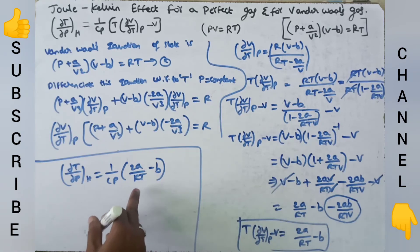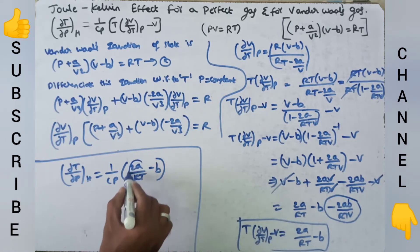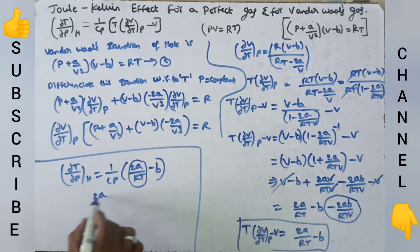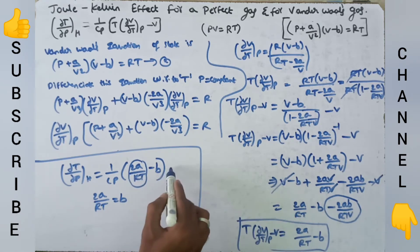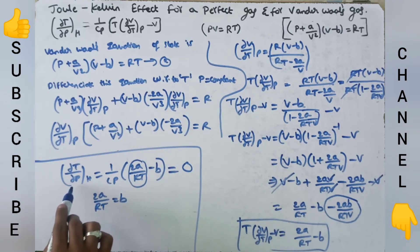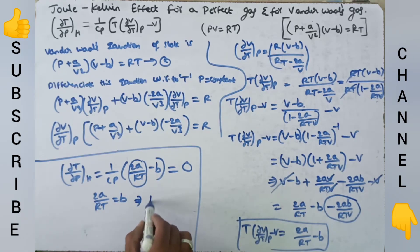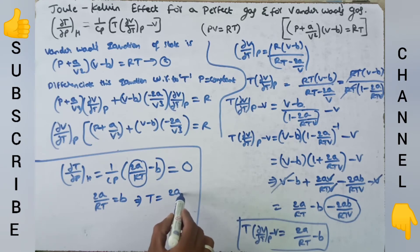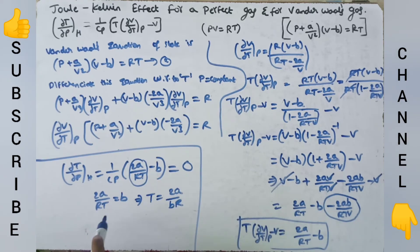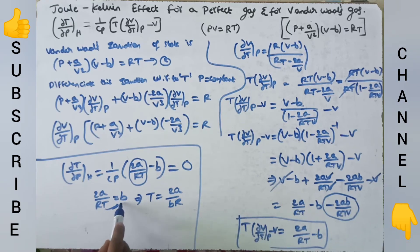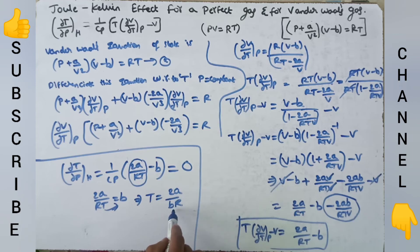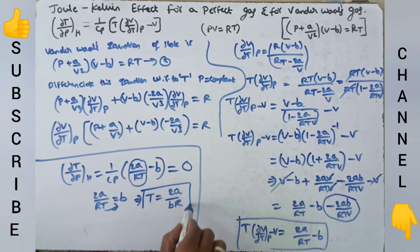If we need to make the Joule-Kelvin coefficient zero, the entire term 2A/(RT) must equal B. If 2A/(RT) = B, then B - B becomes zero and the entire term becomes zero. So for the Joule-Kelvin coefficient to be zero, 2A/(RT) = B, which gives the inversion temperature T = 2A/(BR).